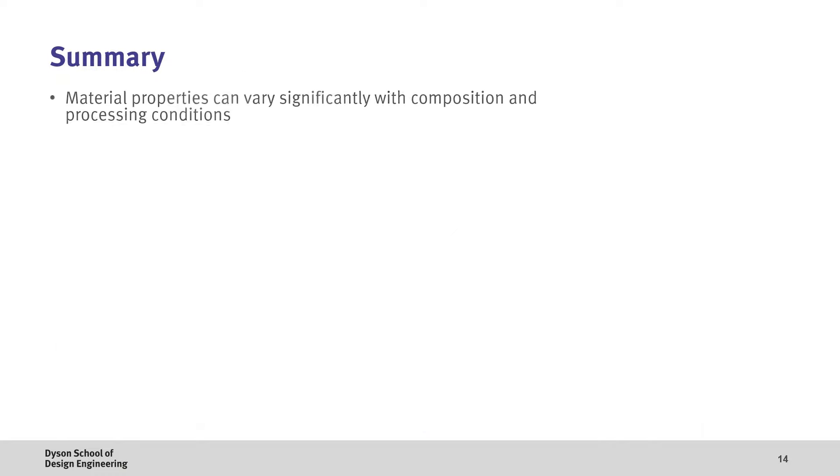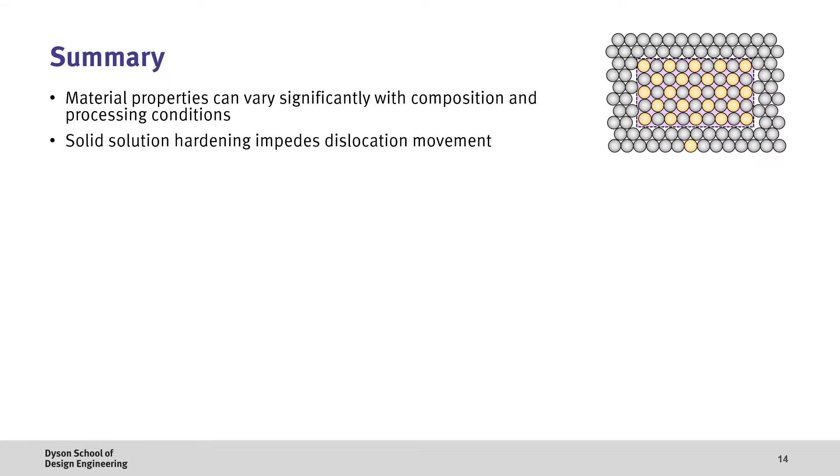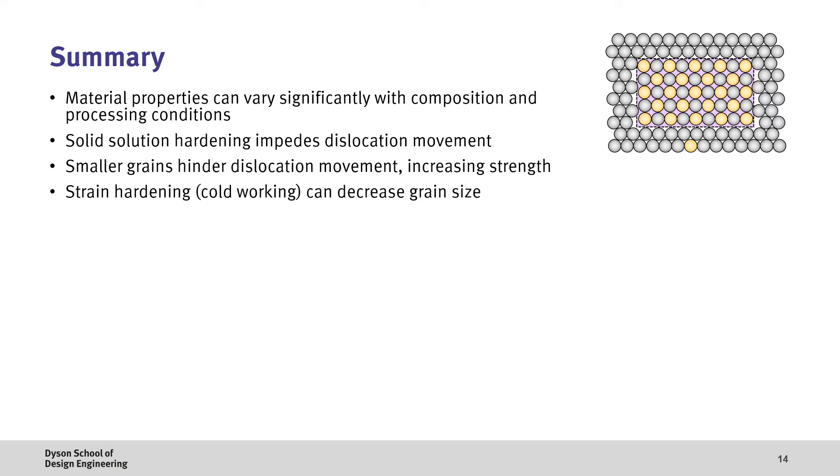So, to summarize. Material properties clearly vary significantly with both composition and processing conditions. In the case of solid solution hardening, we alloy a material with impurities which introduces lattice strains, which impede dislocation movement. Grain boundaries also hinder this dislocation movement, and if we decrease the size of these grains through processes such as strain hardening or cold working, we can decrease the grain size and increase the dislocation density to increase the strength.